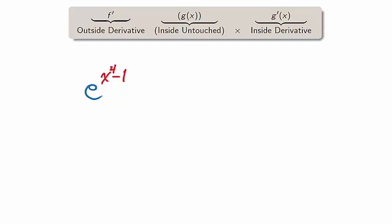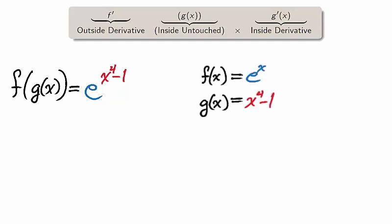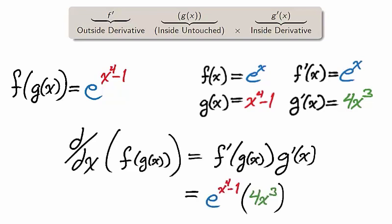For example, this composition has an inside function of x to the fourth minus 1, and an outside function e to the x. The derivative of the inside function is 4x cubed, and the derivative of the outside function is again e to the x. The chain rule states that the derivative of the composition is e to the power x to the fourth minus 1, times 4x cubed. That is, the derivative of the outside function, with the inside left alone, times the derivative of the inside function.